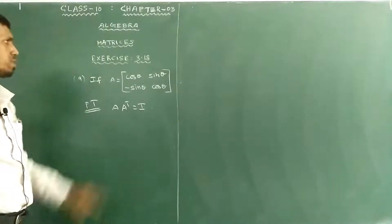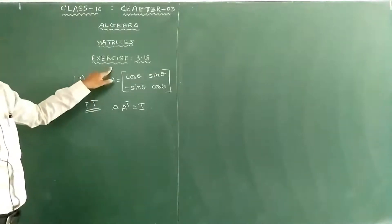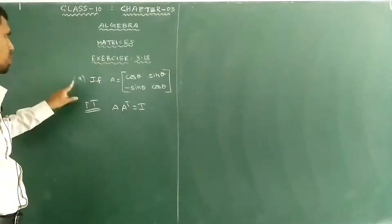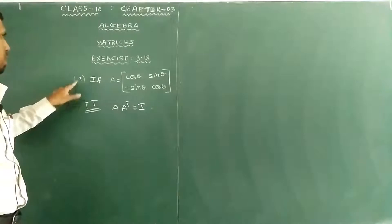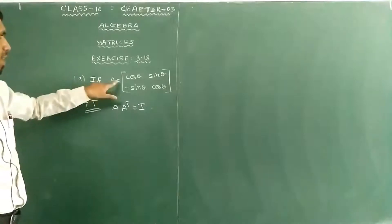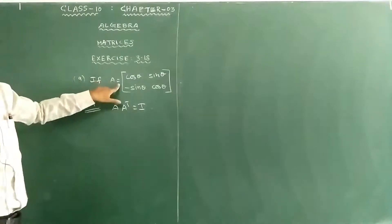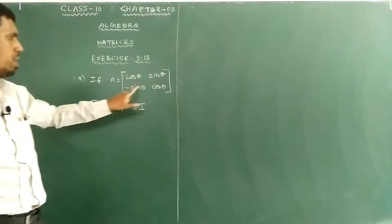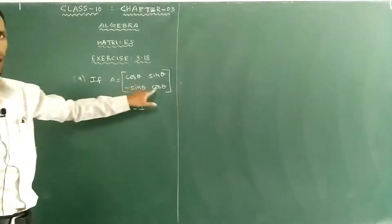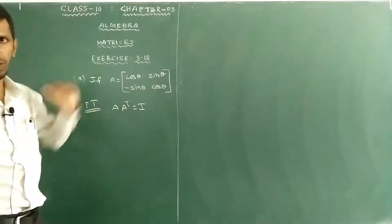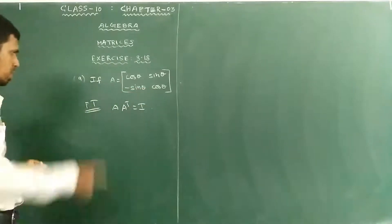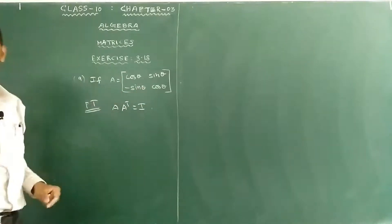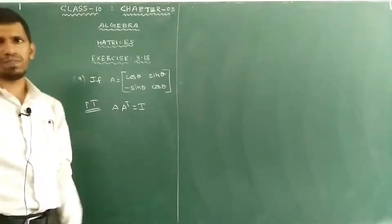Assalamualaikum students. This is Exercise 3.18, question number 9. If A equals the matrix [cos θ, sin θ; −sin θ, cos θ], prove that A into A transpose equals I, the identity matrix.